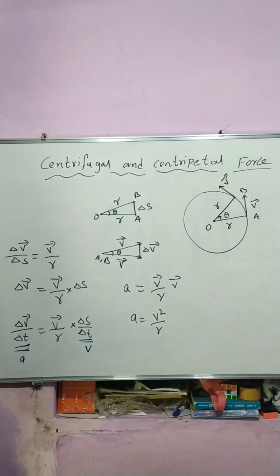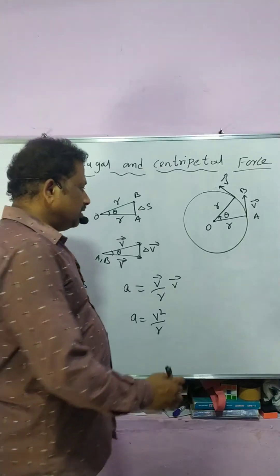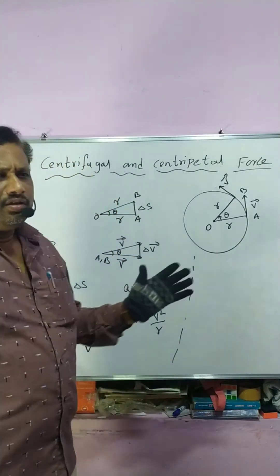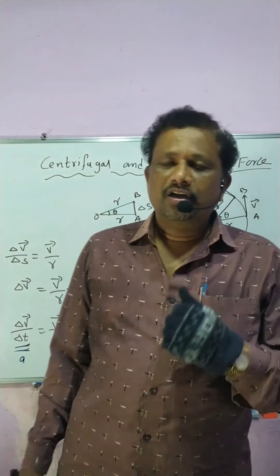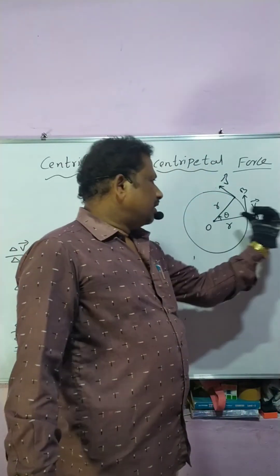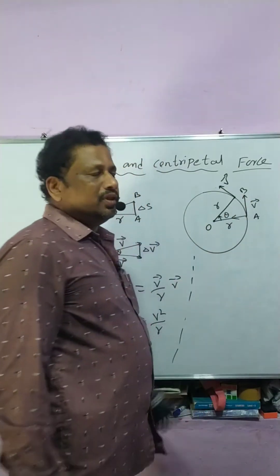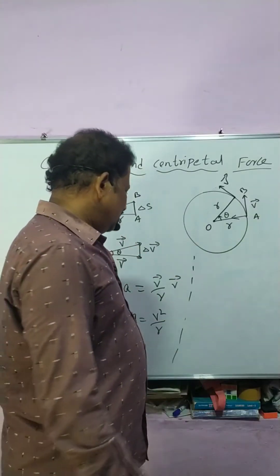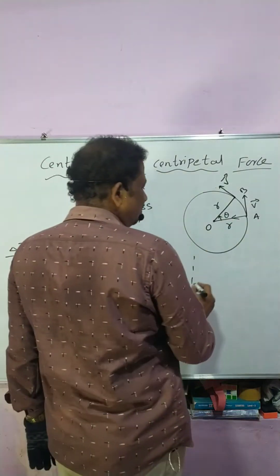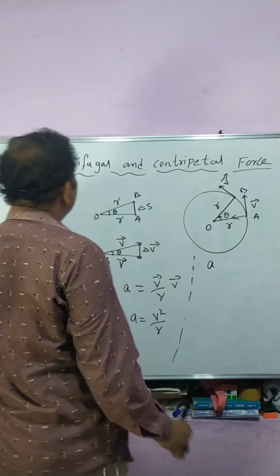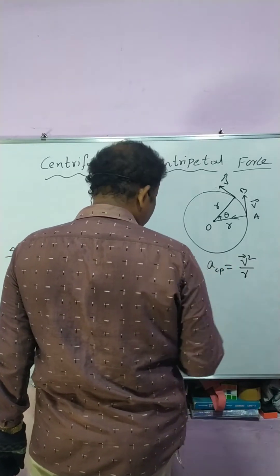This acceleration is acting towards the centre of the circular motion — it is centripetal acceleration. For example, if the moon is revolving around the earth, or the earth is revolving around the sun, this centripetal acceleration acts towards the centre. Centripetal acceleration equals V² / R.